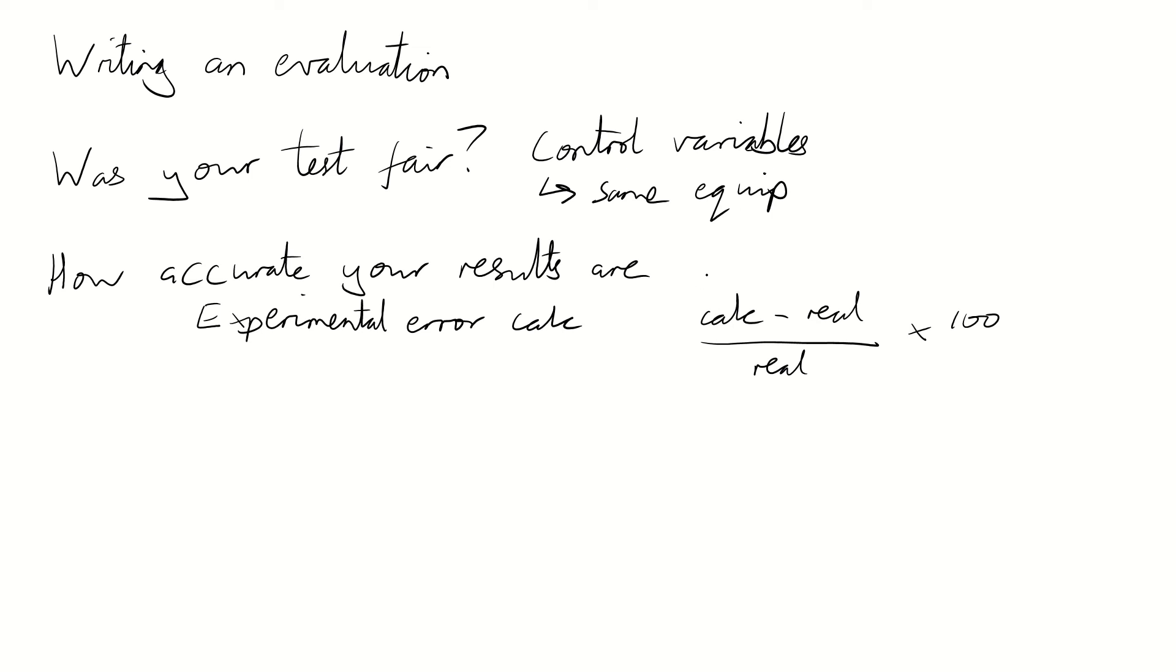But this gives us a quantitative value that we can use for stating how accurate our practical was. So generally you want this to be smaller. Smaller the better. If you've got an experimental error that's like 80%, 90%, something's really screwed up there. Whereas for students, typically 10%, maybe 20%, then you're usually fine with that.